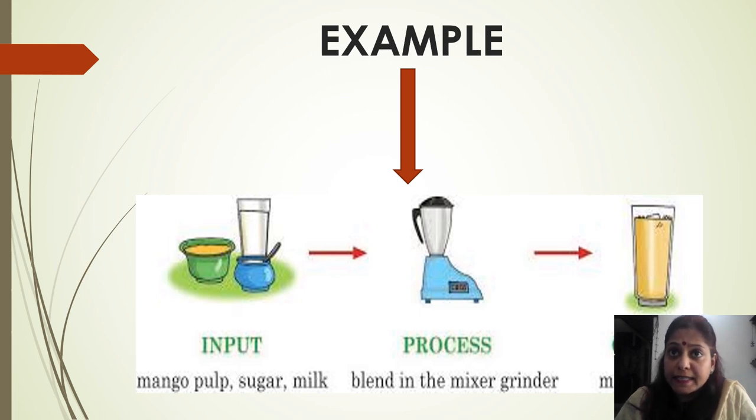Let us understand the function with the help of example. Take an example of mango shake. Input, we required mango, sugar, and milk. All these things need to put in a grinder. These things we call input. All the things blending in a grinder is called process.